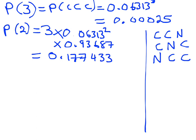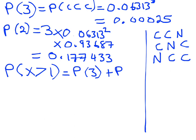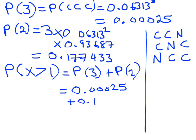Then we combine those together, because we need the probability that more than one bottle is over or underweight. That's the probability of three bottles plus the probability of two bottles: 0.00025 plus 0.011743, and that gives us a probability of 0.011. And there is our answer.